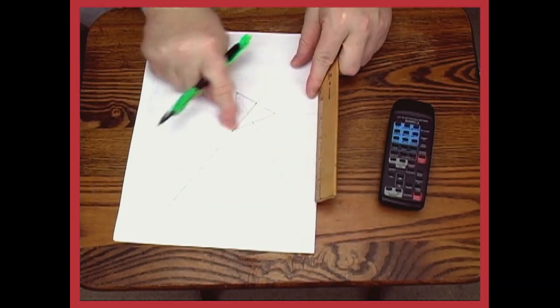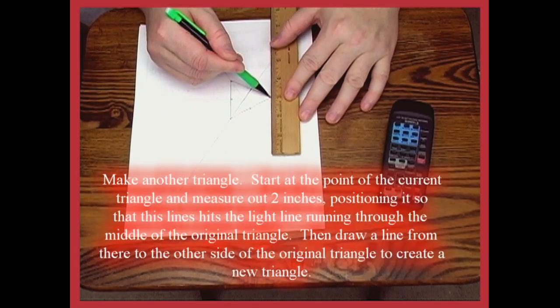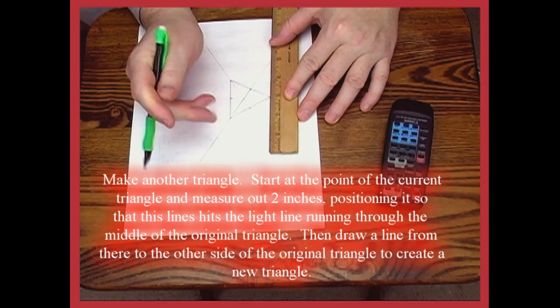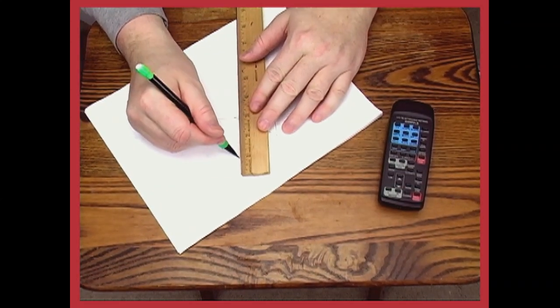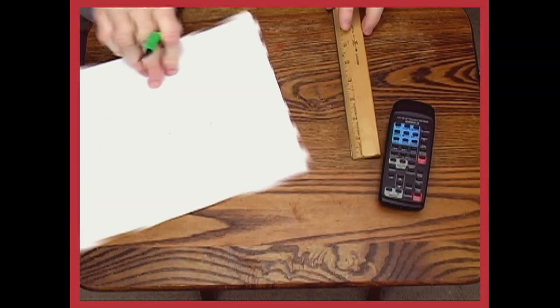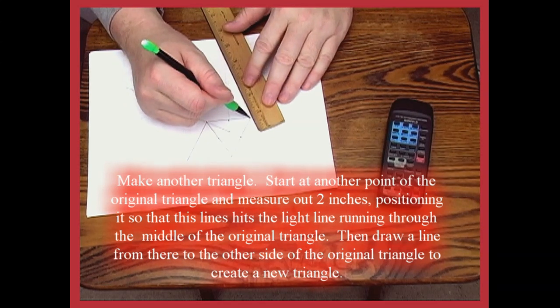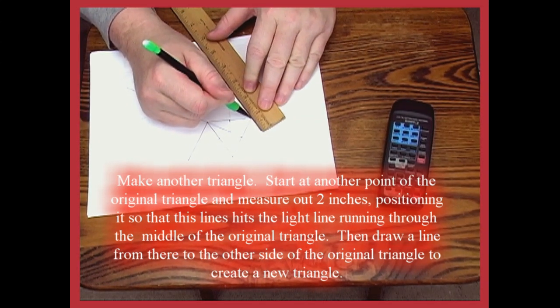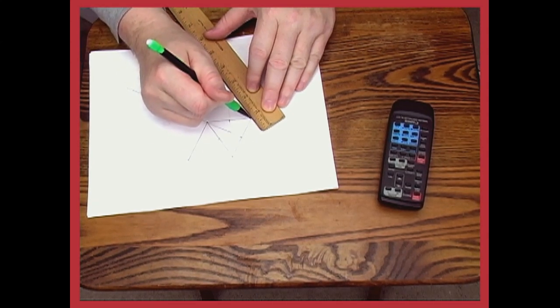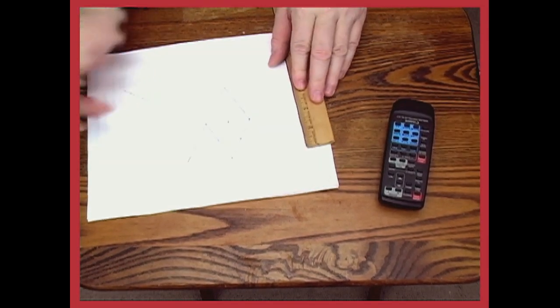Now, take your ruler. Pick one side of the triangle. Start at the point, measure out two inches or whatever measurement you're using, and angle it so that it hits the line. And then draw a line to connect it. And go to the other side and do the same thing.